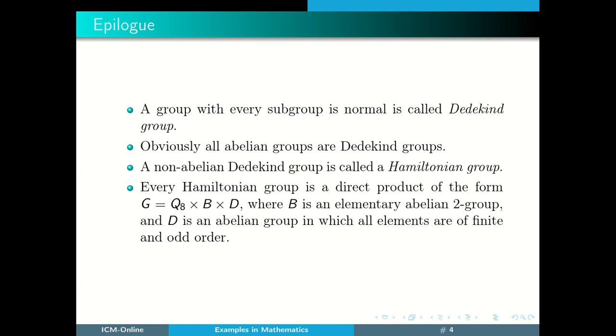Now we have a structure theorem for Hamiltonian groups. Every Hamiltonian group is a direct product of the form Q8 cross B cross D, where B is an elementary abelian 2-group. That is, the order of every non-trivial element is 2. And D is an abelian group in which all elements are of finite and odd order.